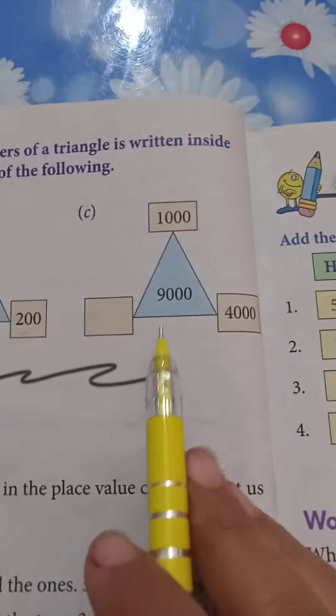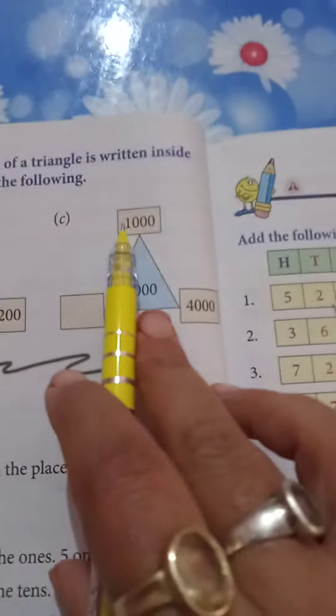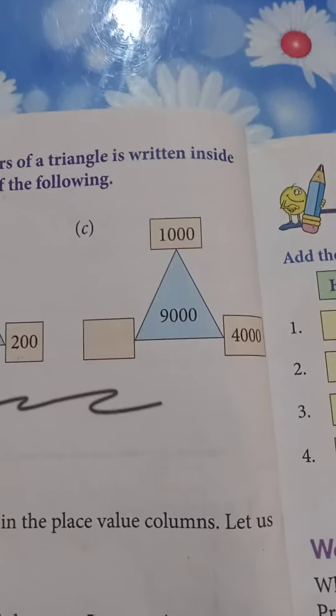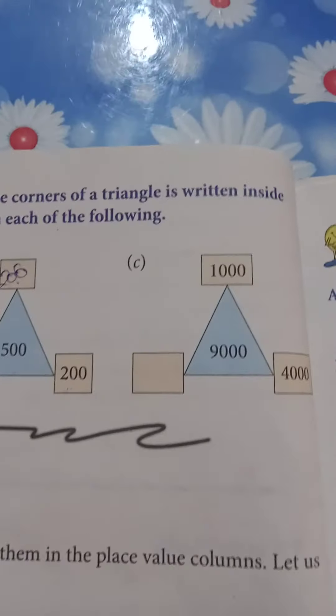So the next one is 9,000. And what is this? 4,000, 1,000. So what should happen here? How many thousand? You have to complete and give me the answer in the comment box.